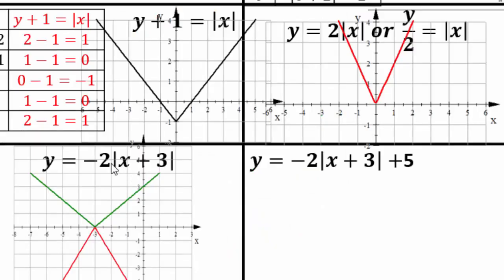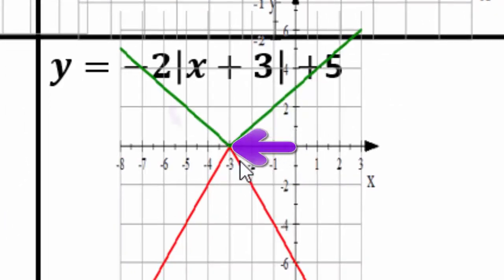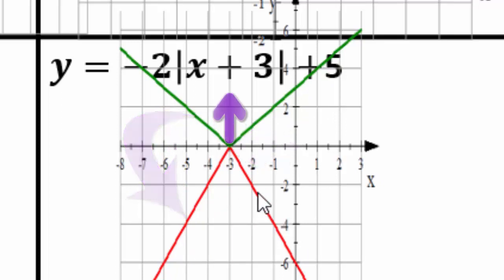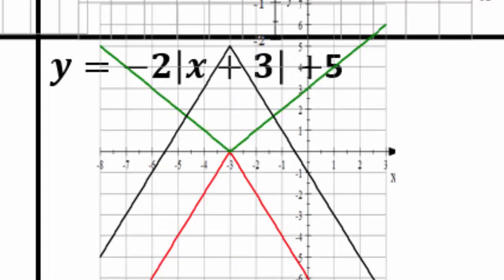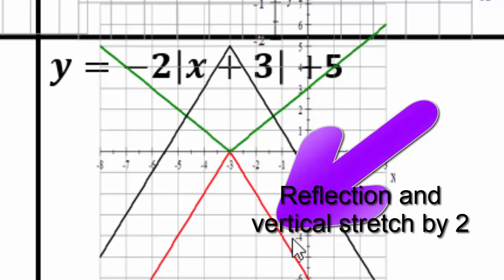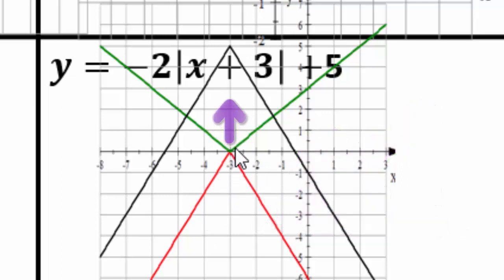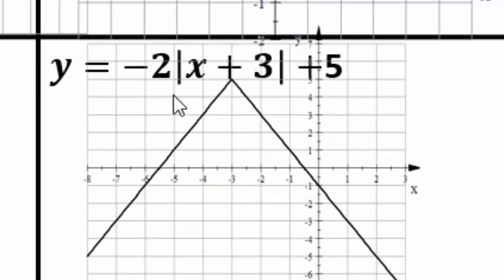For y equals negative 2 times |x plus 3| plus 5: this is the same as the previous graph but the plus 5 shifts it up 5. So the steps are: shift left 3, reflect across the x-axis with a vertical stretch of 2, then move up 5. The green graph is the original v-shape, the red graph is its reflection, and taking that up 5 gives the final graph.